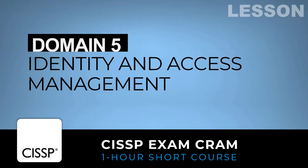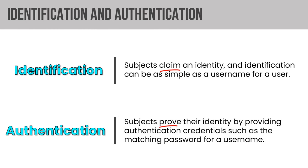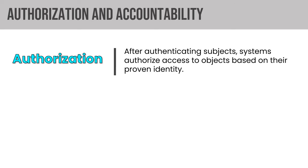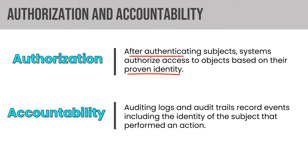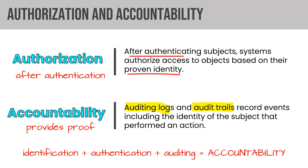Let's start by defining identification — where a subject claims an identity, typically by providing their username. Authentication is where the subject proves their identity, typically by providing credentials like a password, or in multi-factor authentication, a password plus something more. Authorization comes after authentication, where a system authorizes access based on that proven identity. Accountability covers the auditing logs and trails that record events related to that identity. Identification plus authentication plus auditing equals accountability.